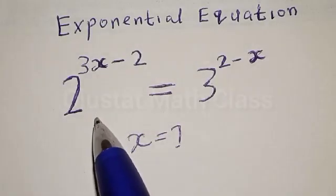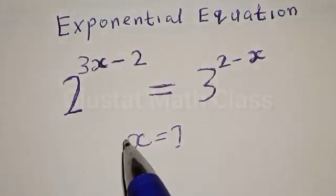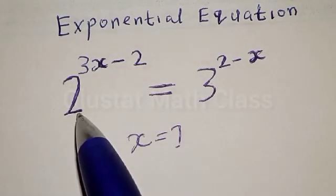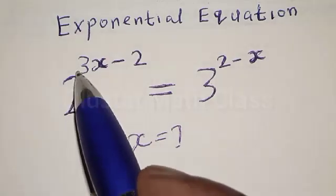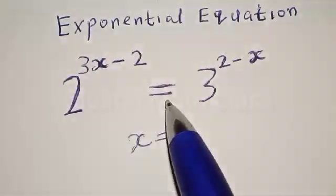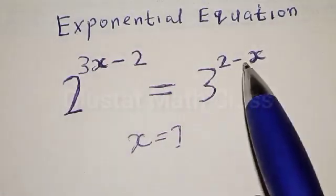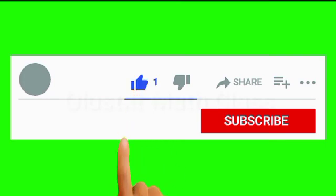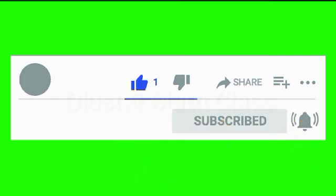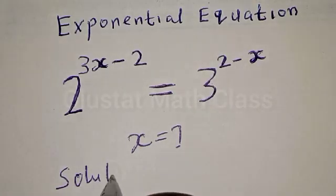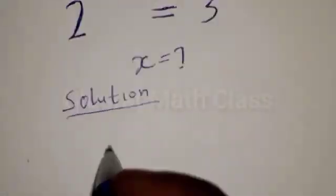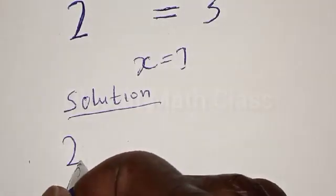Hi everyone, welcome to my class. In today's class we want to find the value of x from this given exponential equation: 2 raised to power 3x minus 2 is equal to 3 raised to power 2 minus x. But before we proceed, please don't forget to like, share, comment and subscribe. Thank you.